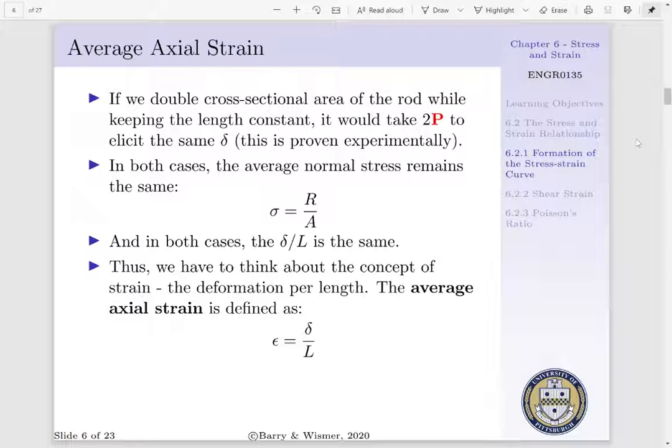And strain is defined as our deformation per length. Therefore, our average axial strain, denoted as epsilon, is defined as delta per L.